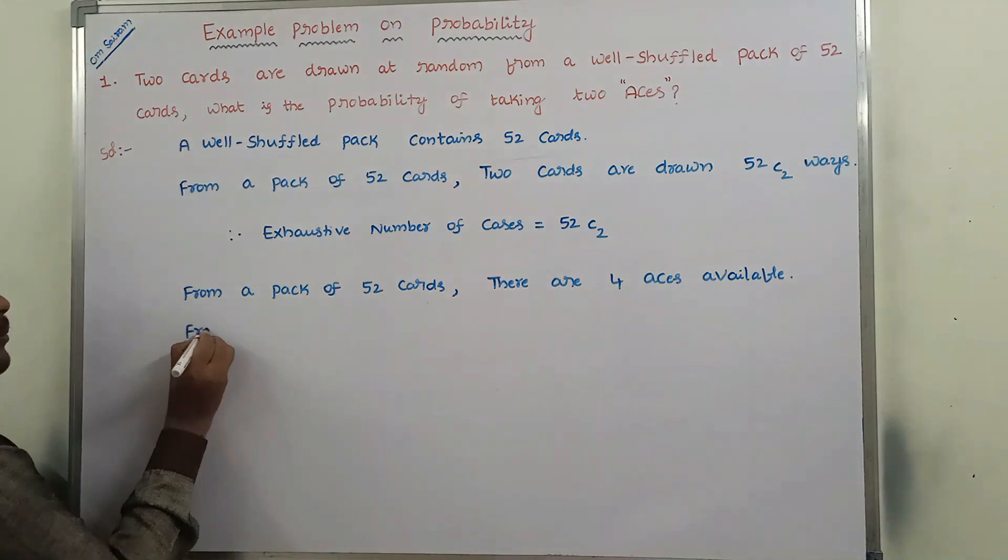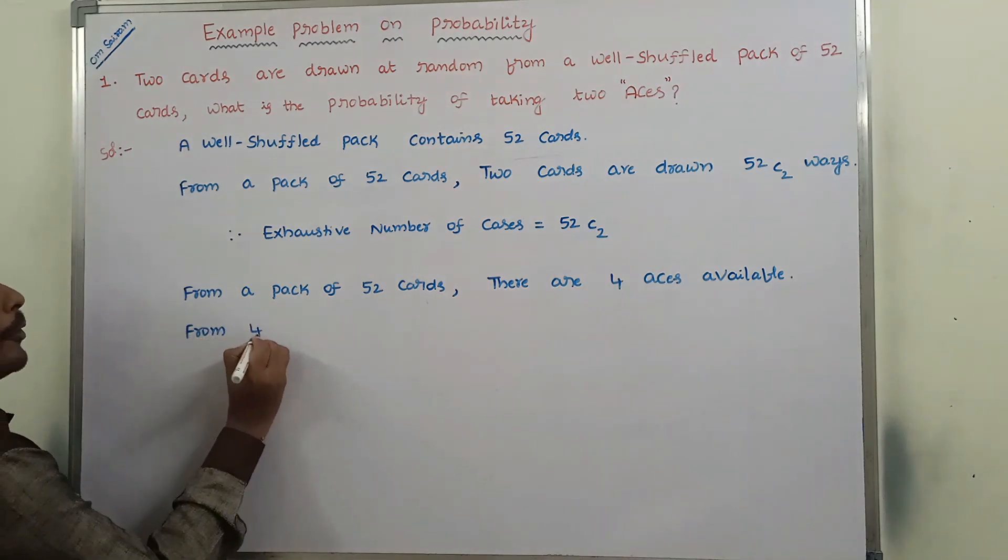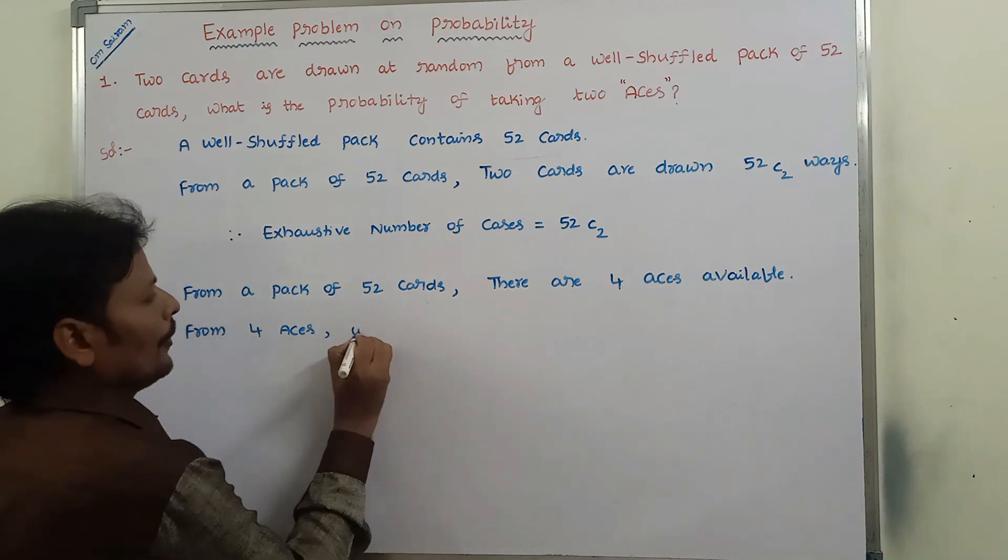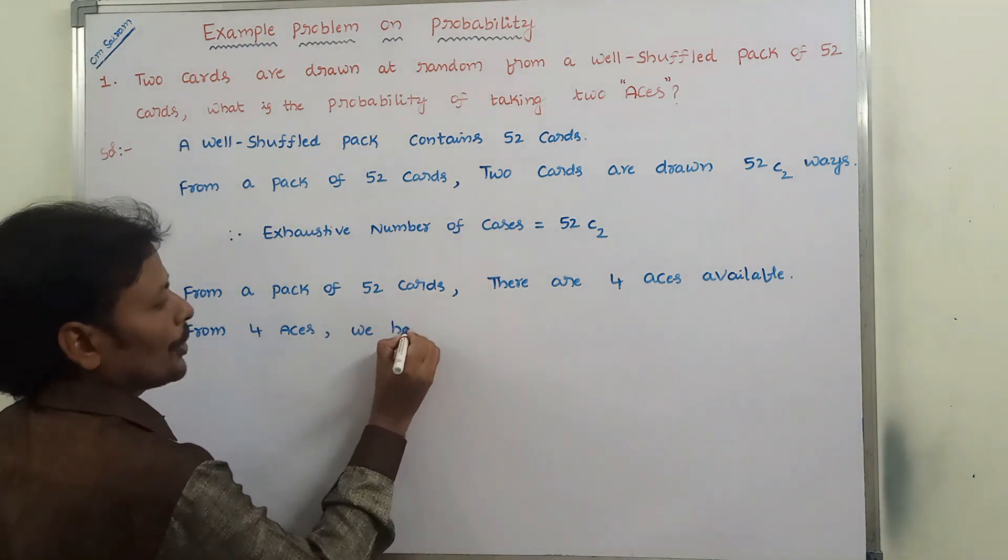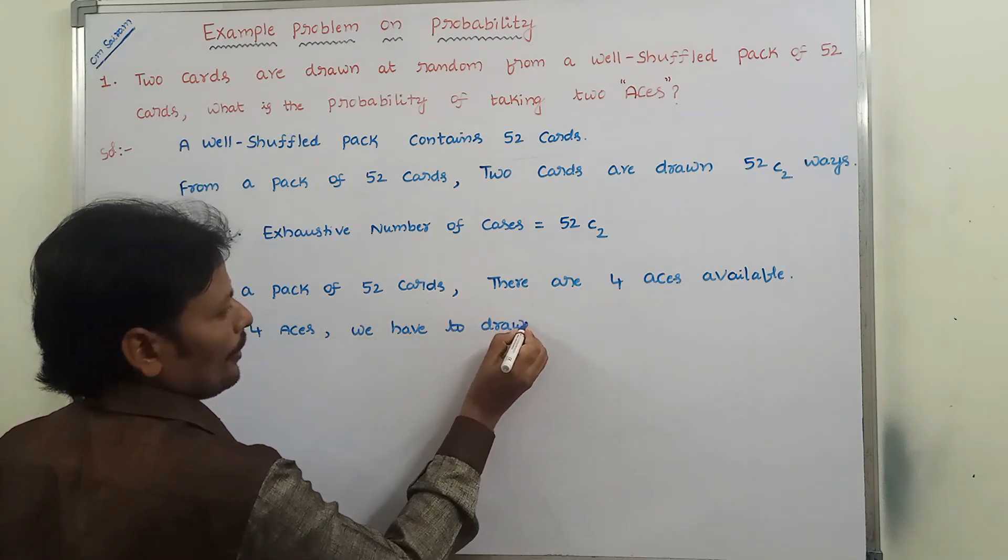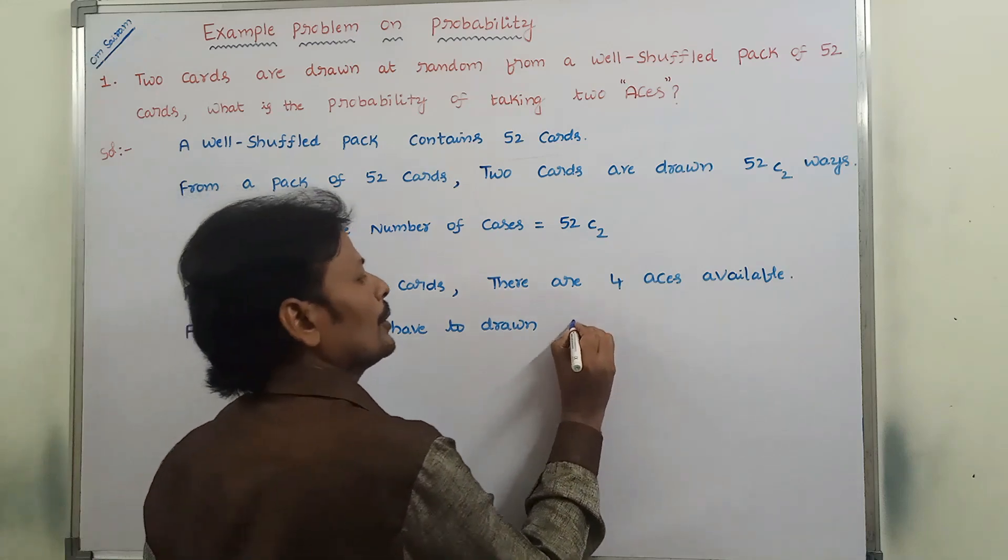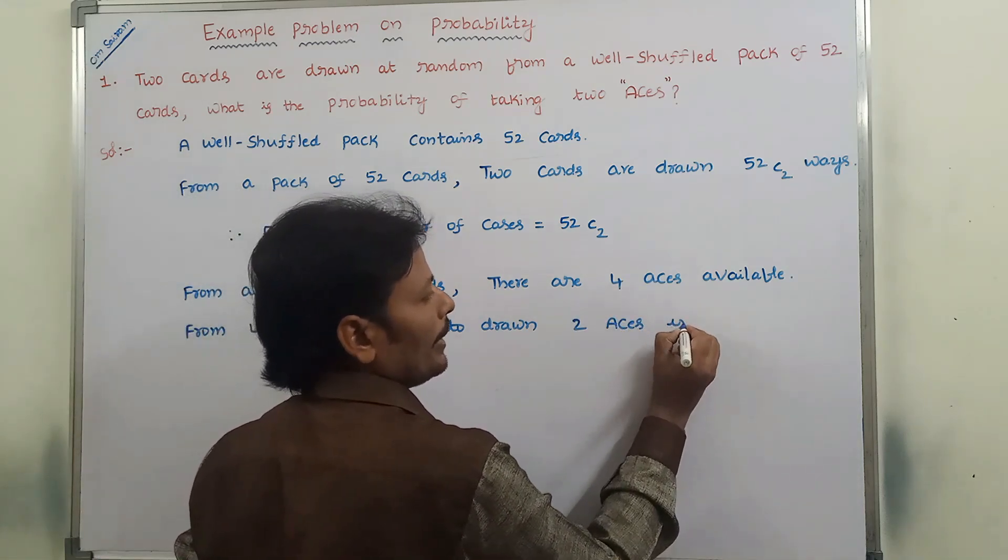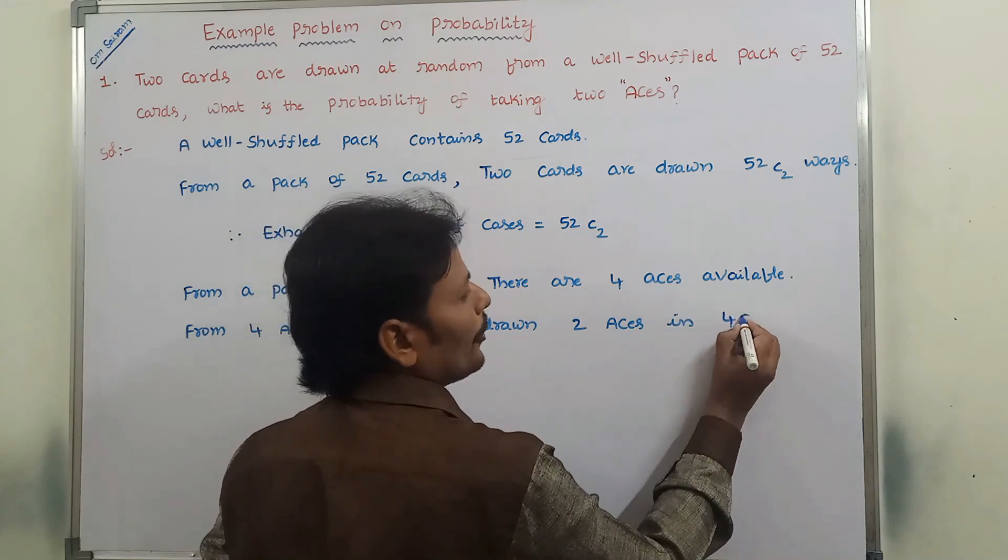From four aces, we have to draw two aces in 4 C 2 ways.